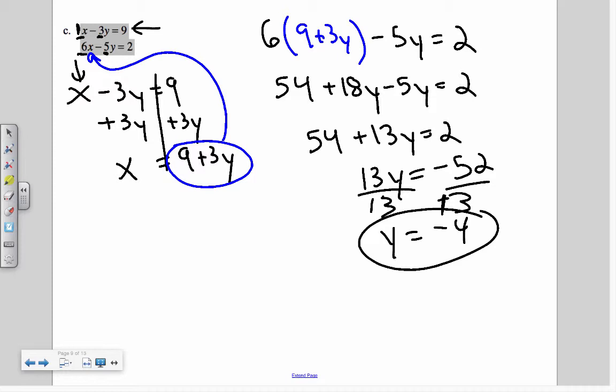Now, I take that negative 4 and I'm going to plug it in for this y here to solve for x. 9 plus 3 times negative 4. 9 minus 12. Negative 3. So my final solution is negative 3, negative 4. And that is how I would do those purely algebraic problems.